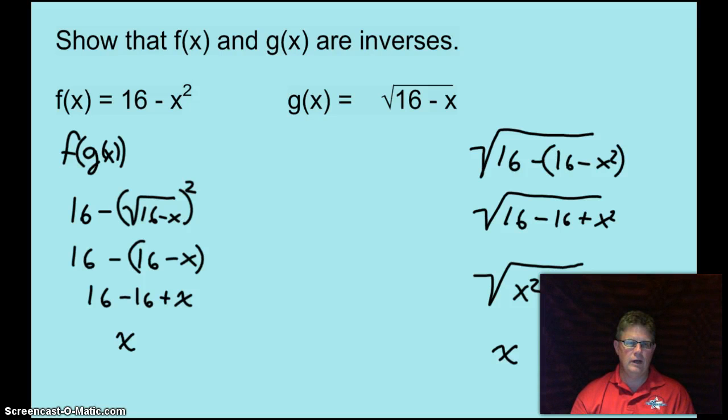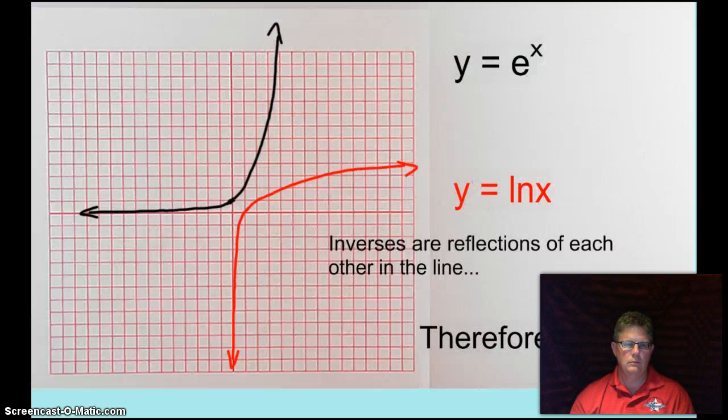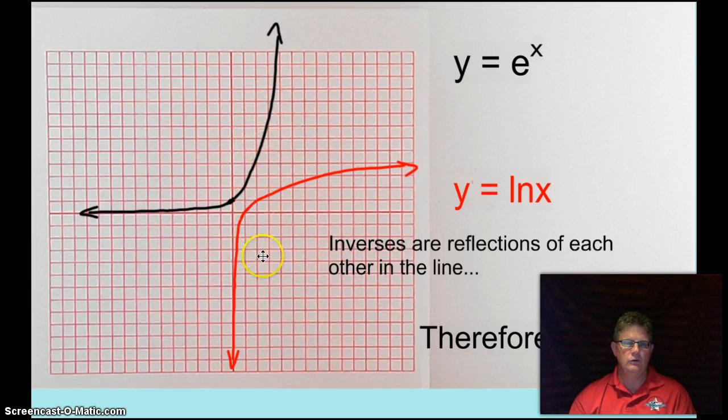Let's go ahead and move on and talk a little bit more about inverses. Alright what we have here is a very quick graph of Y equals ln of X and the graph of Y equals e to the X. Now inverses are always reflections of each other in a certain line and that line is